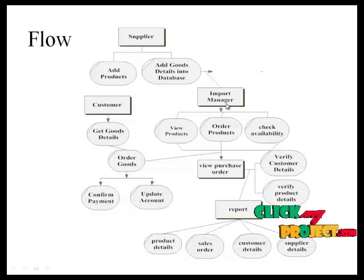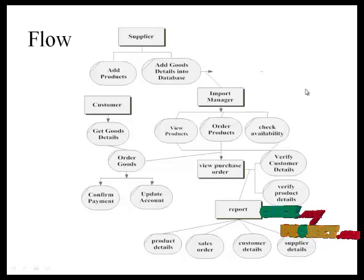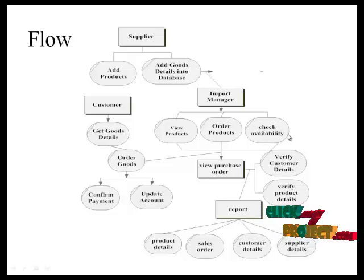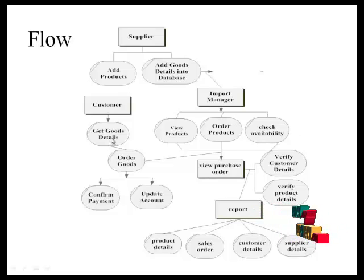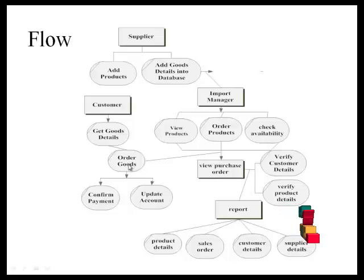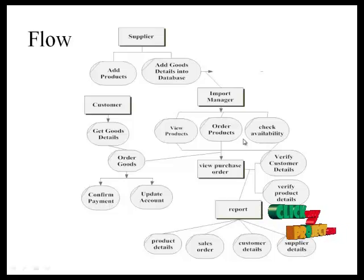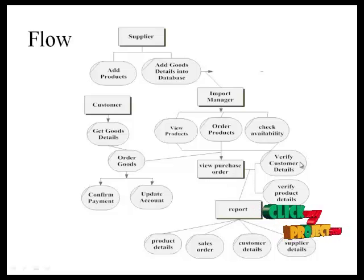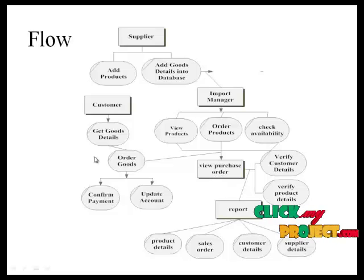The input manager will log in by providing username and password, then view the product details already added by the supplier. The input manager can make an order for a particular product to the supplier and check availability of added products. The customer will get product details, order products, and make payment. The purchase order details will be viewed by the input manager, who will verify customer and account details and provide the purchase order to the customer.